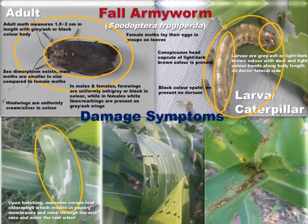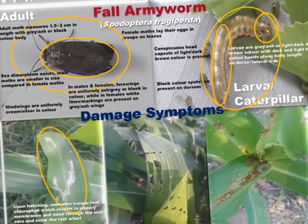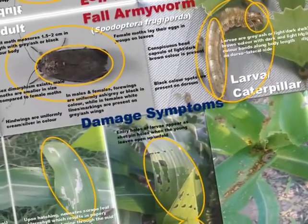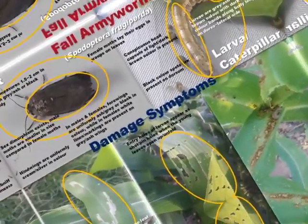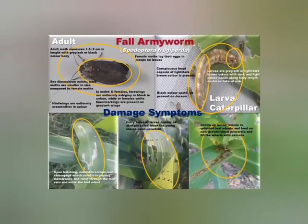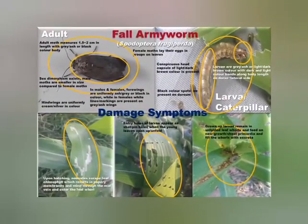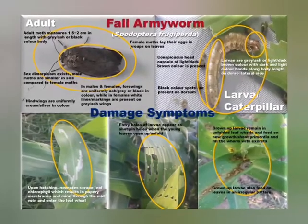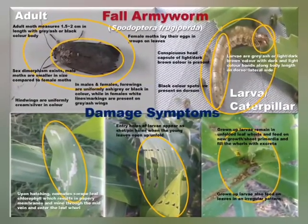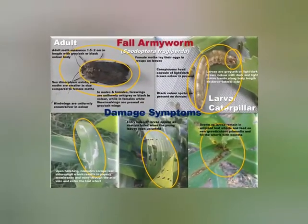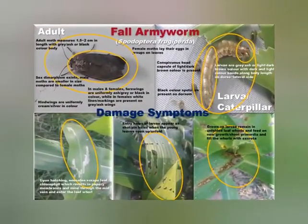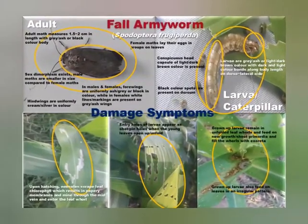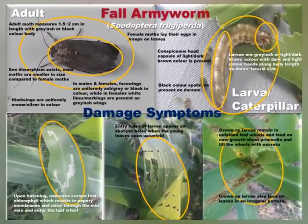Although the larva makes one entry hole through the leaf whorl, since the leaf is in a whorl or folded condition, when it opens up the single entry hole appears like four to five short holes or pinholes. The larva remains in the whorl and feeds on the new growth or leaf primordia, filling the leaf whorl with excreta. Opening the leaf whorl suspected of fall armyworm infestation reveals papery membranes, short holes on the leaves, and larvae and excreta inside the whorls.